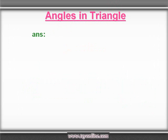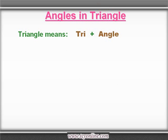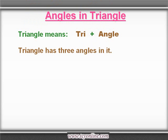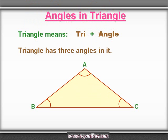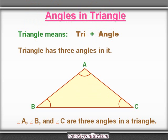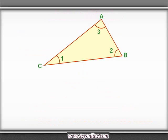Now let's understand the meaning of triangle. If we split the word triangle, it would be tri plus angle. Tri means three, so that means in a triangle we have three angles. See in the picture — A, B, and C are the three angles. Let's learn the angle sum property.